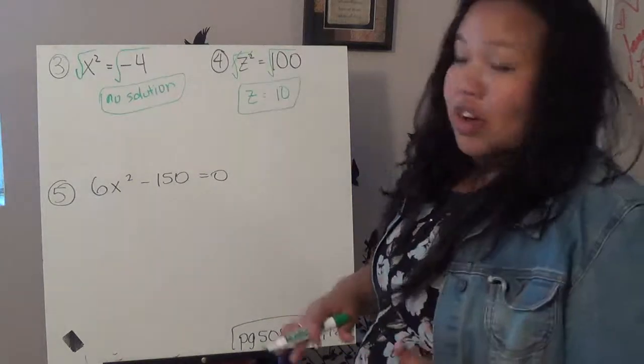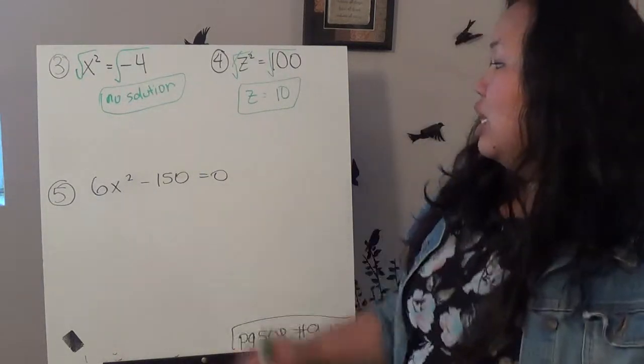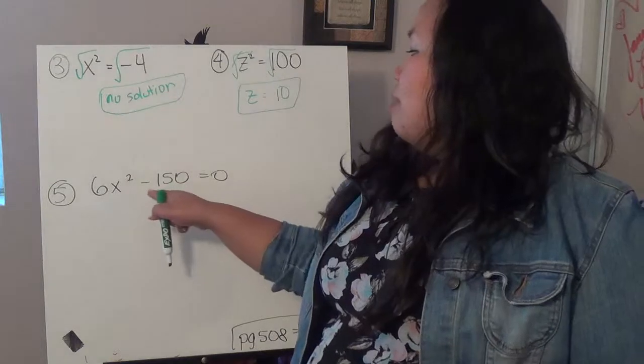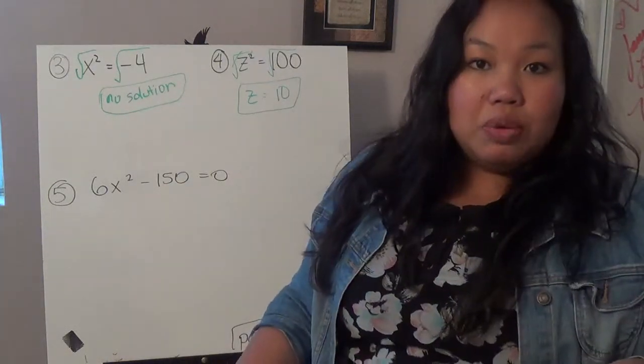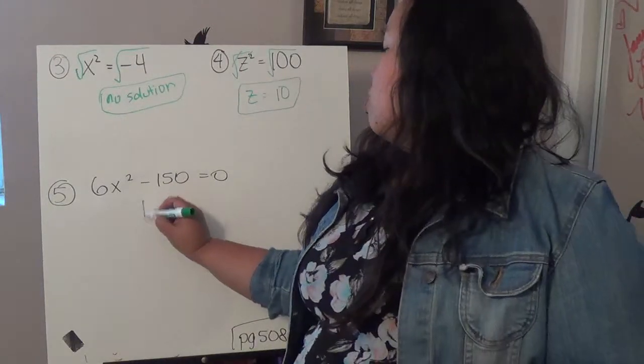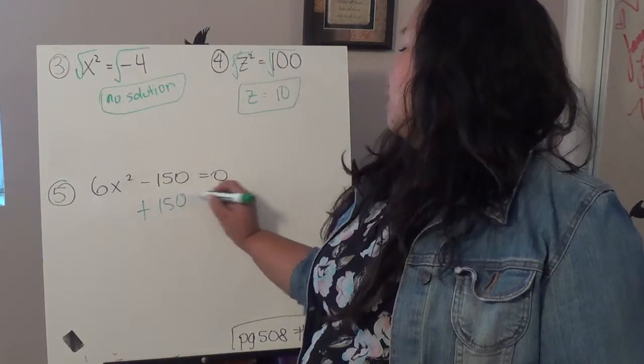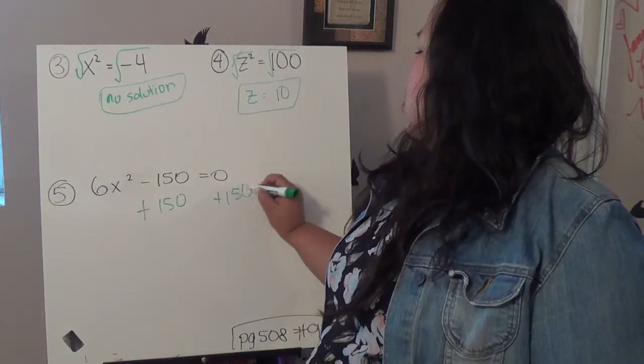By getting rid of all its friends, just like previously. So, in this case, I'm going to start with getting rid of 150. Well, it's being subtracted, so the opposite would be addition. So, I'm going to add 150 to both sides.